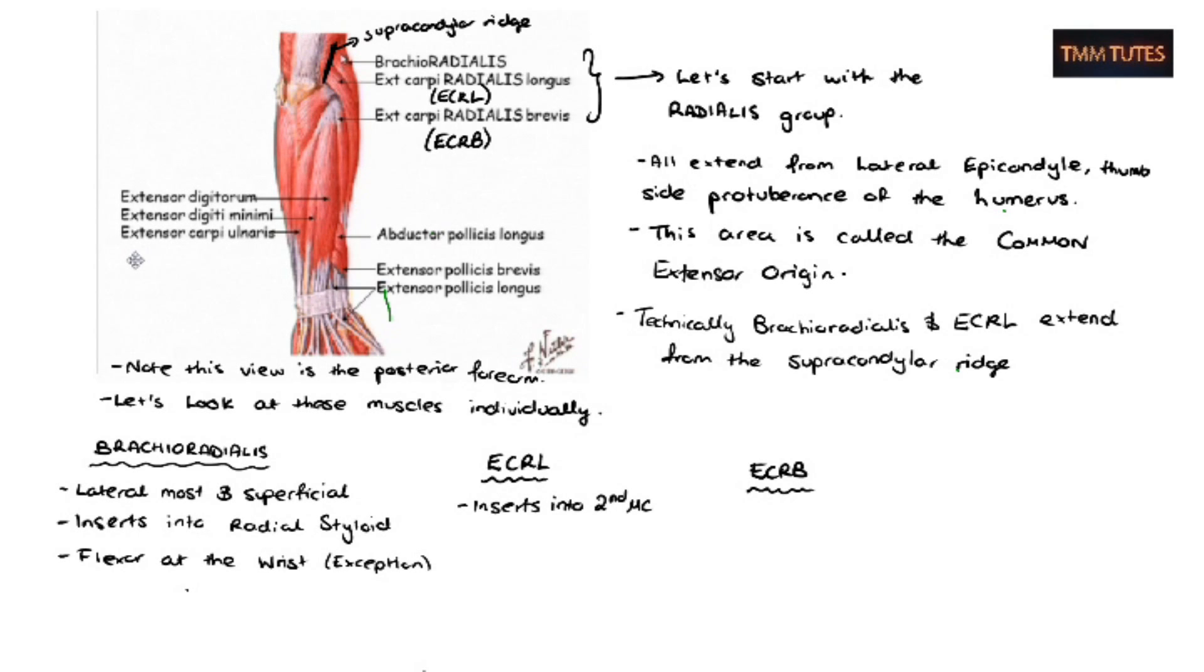So ECRL inserts into the second metacarpal and ECRB inserts into the third metacarpal. Look at my bone lectures to learn about the metacarpals. But together they extend and radially deviate. So they move the whole hand without moving any of the digits or any extension of flexion towards the thumb side. It's actually quite hard to do in isolation.